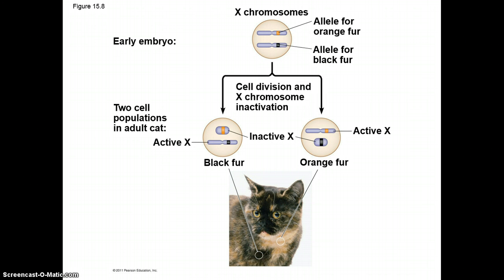For example, calico cats. The allele for orange fur and the allele for black fur are both located on the X chromosome. As the cell divides into two cell populations in adult cats, if the active X chromosome has the black allele, then black fur will be exhibited. And if the active X chromosome has the orange allele, then the orange fur will be expressed.